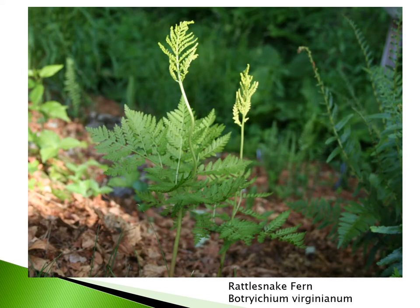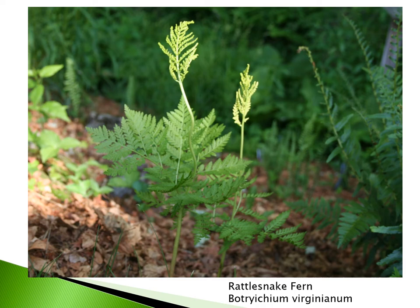Rattlesnake fern, Botrychium virginianum, is also an interesting fern. It forms a single tripinnate frond, and from the center of that frond arise fertile fronds — the dimorphic portion — that are quite stunning. The plant itself is about ten inches to the top of the leafy portion, with another five or six inches for the fertile portion. Botrychium are difficult to grow from spore, apparently needing special treatments to germinate, but they're not too difficult to get established in the garden. This species prefers a more neutral soil, so adding some limestone or marble chips to the soil can be quite helpful.